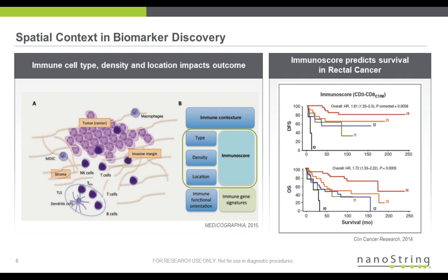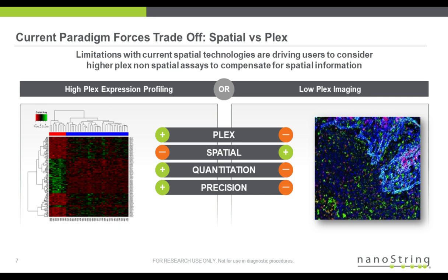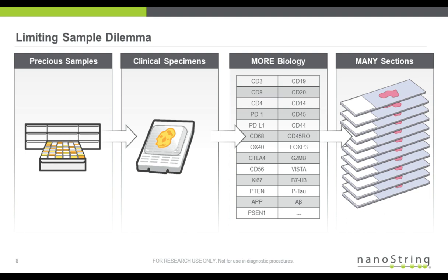Spatial context is crucial for biomarker discovery, as reflected in the development of the immunoscore, which is determined by cell type, cell density, and location of immune cells. The current paradigm forces a trade-off: if you run HyPlex gene or protein expression analysis, you lose the spatial information; but if you do imaging analysis, it is usually low-plex with poor quantification. Given cellular complexity and ever-expanding therapeutic strategies, there is a critical need to attain more biological information from limiting amounts of clinical samples.